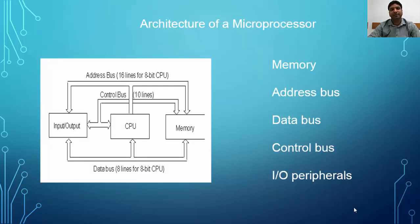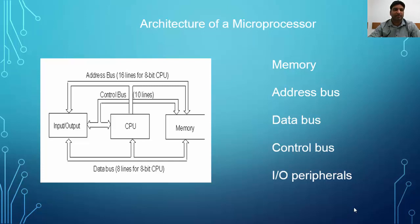Now let's quickly look at the internal architecture of a microprocessor. A microprocessor is made up of a memory unit, address bus, data bus, control bus, and input-output peripherals. The memory unit holds all the op codes and instruction sets, whereas the CPU allocates addresses to each op code. The data transfer between input-output devices and the CPU is managed by the data bus, and the control bus manages and prioritizes tasks.